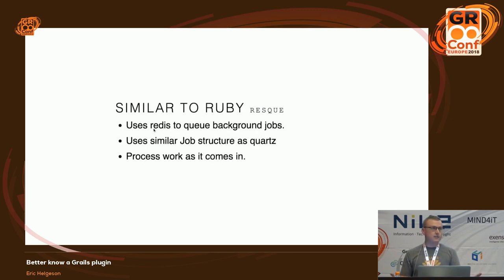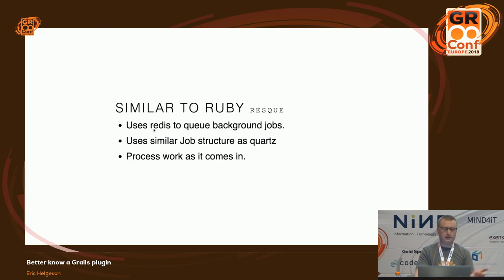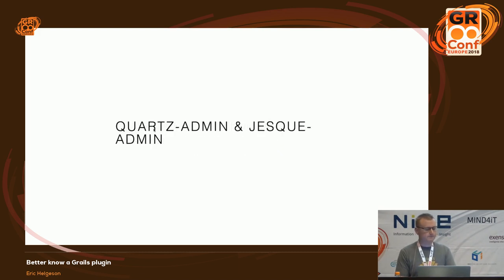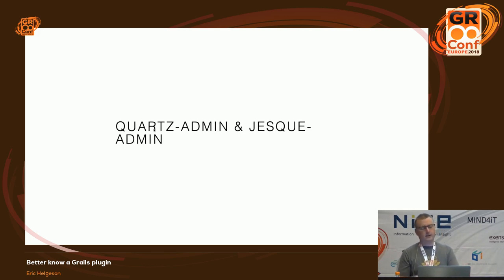JustQueue is another scheduling option, similar to Ruby's ResQueue. It uses Redis queues to store and execute jobs, processing them as they come in. It uses the same job artifact structure as the Quartz plugin. There's a Quartz Admin and JustQueue Admin UI, though they're not well maintained right now, but they do give you an interface to see what's going on in your queues and do basic administrative tasks.